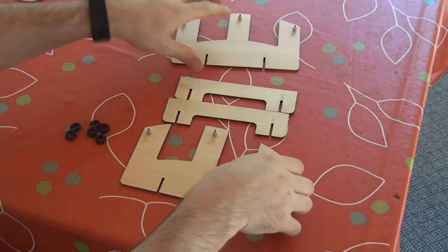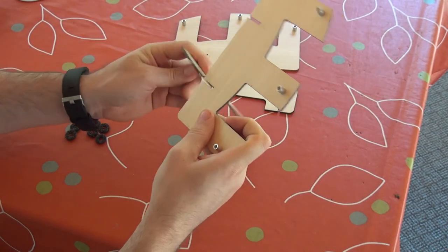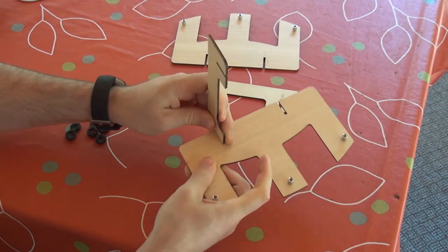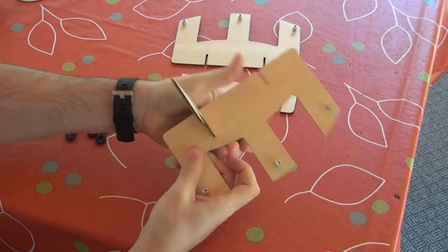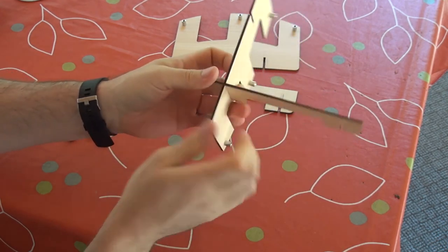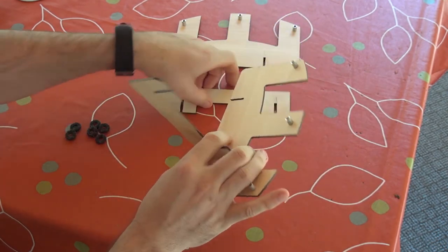Then the last step is just to slot the pieces of wood together like this. You'll know that they're fully inserted when the pieces are flush on the bottom like so.